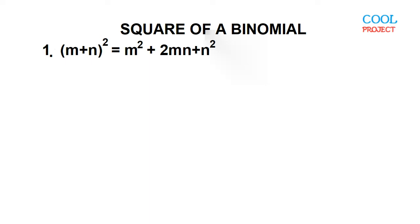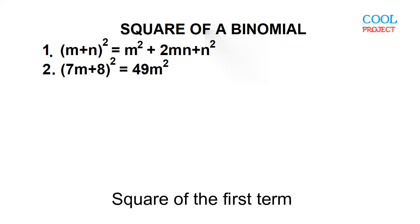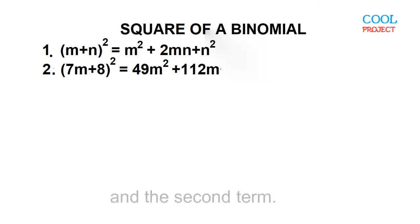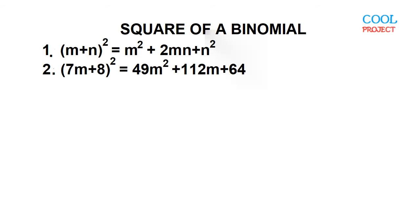Example number two: the square of the quantity 7M plus 8. This is equal to 49M squared plus 112M plus 64. 7M times 7M is 49M squared, 7M times 8 is 56M times 2 is 112M, and 8 times 8 is 64.